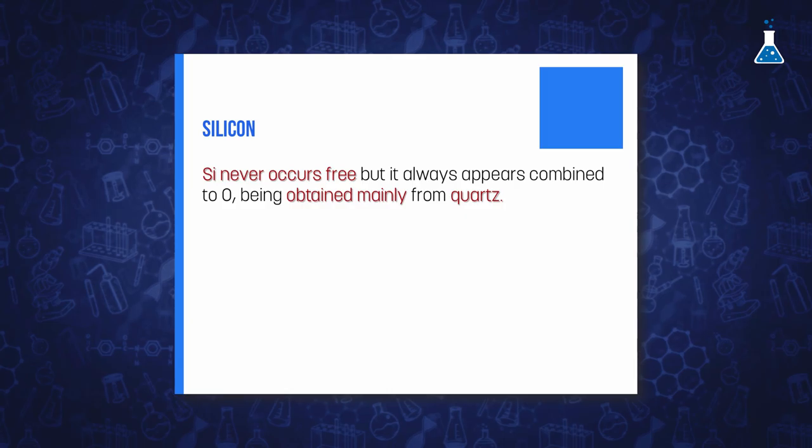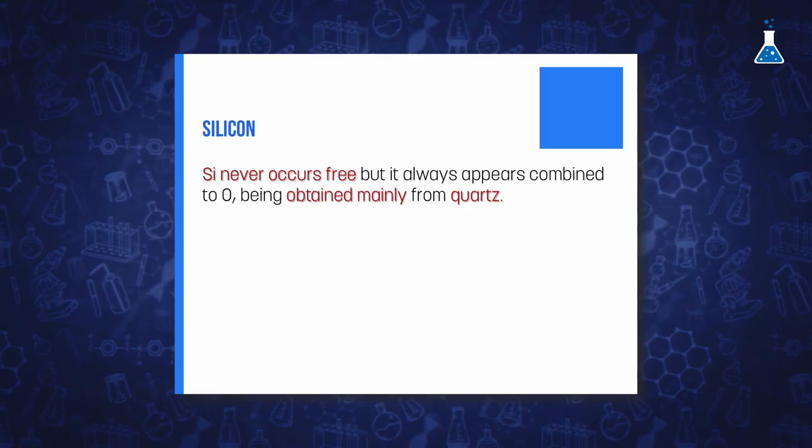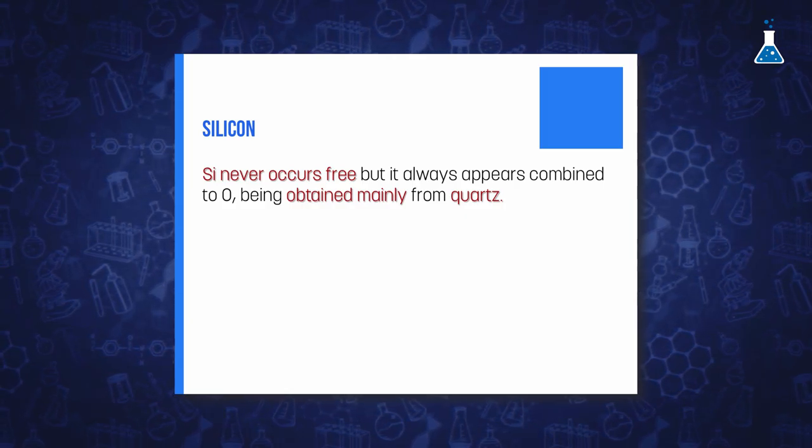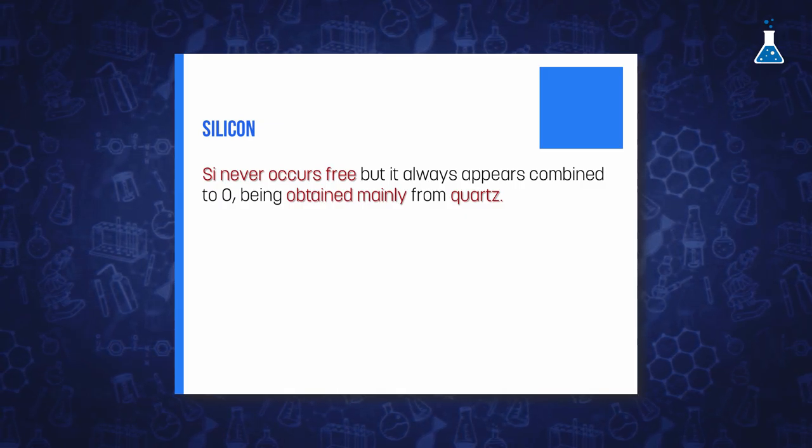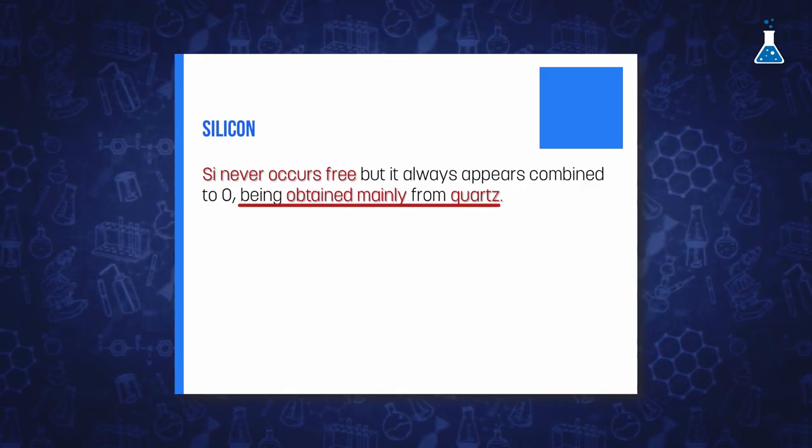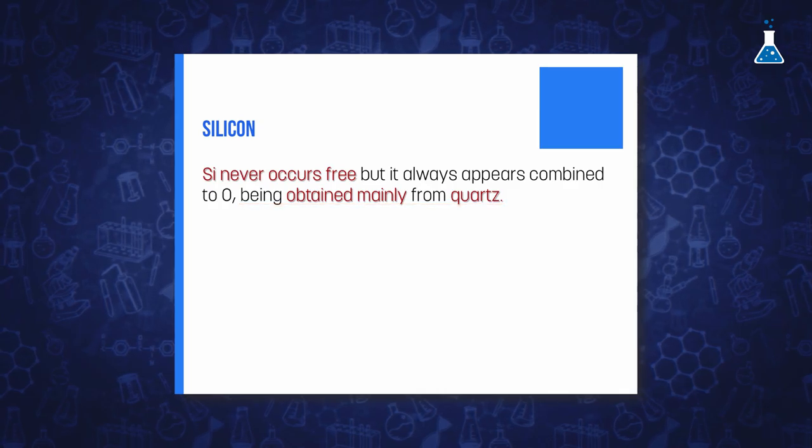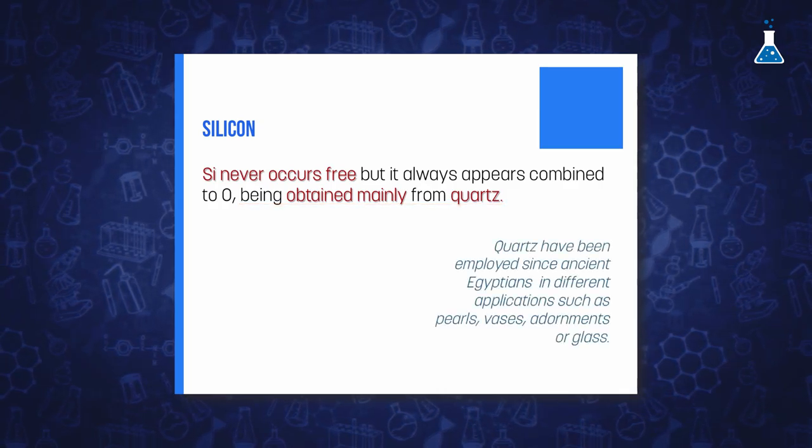Silicon never occurs free, but it always appears combined with oxygen, usually in a four-coordinated combination. The main natural source of silicon is pure quartz, which has been employed since ancient Egyptian times.